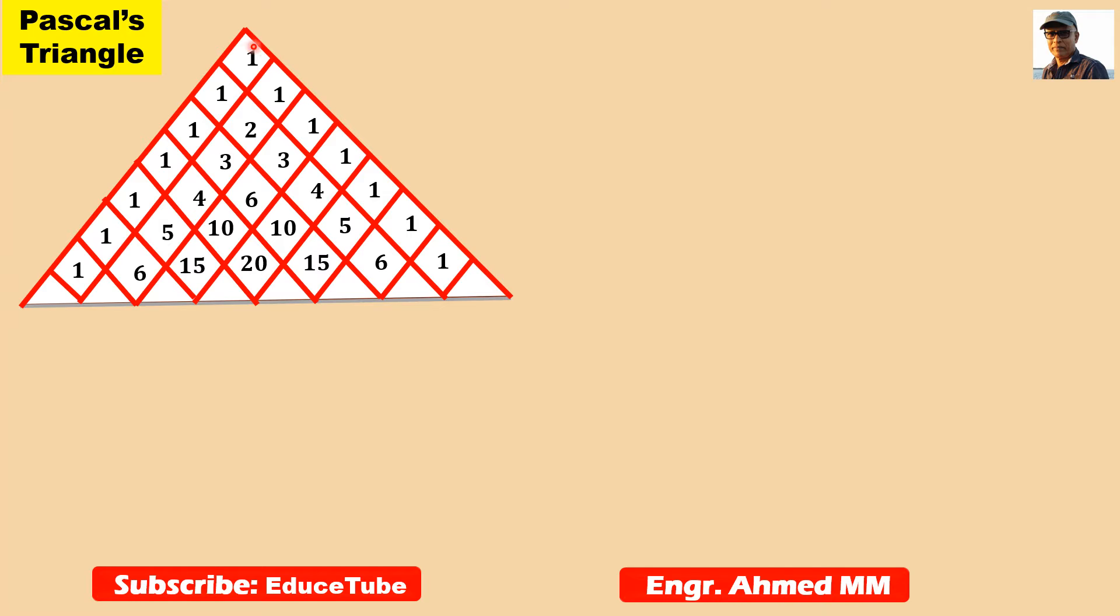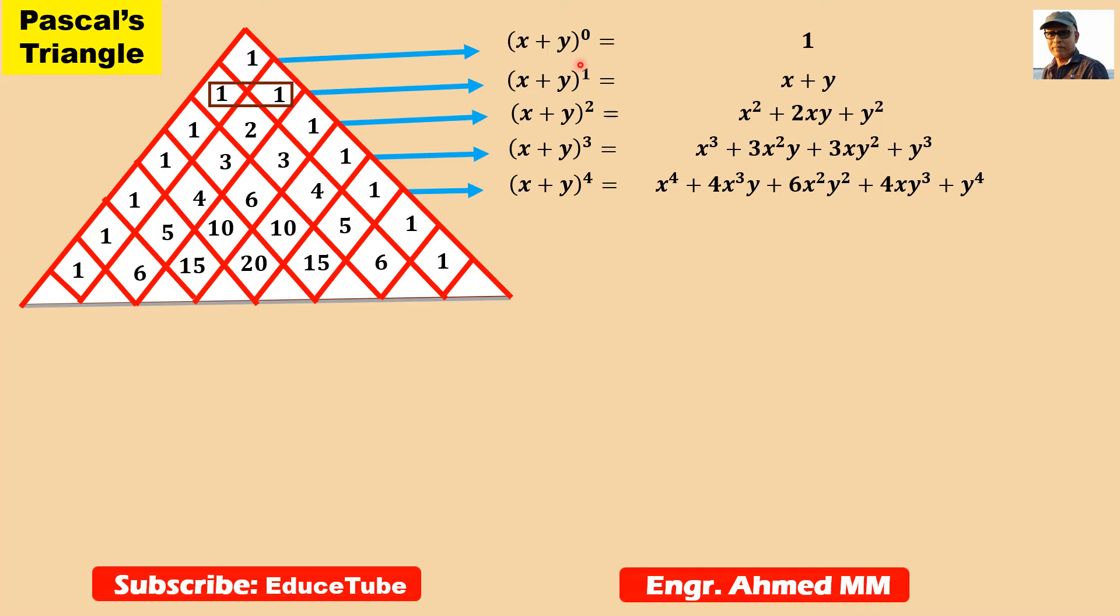So here there are seven lines. This is line zero, first line, second line, third line, fourth line, fifth line. We can go for sixth, seventh, eighth, whatever we want, but I am keeping it up to fifth.